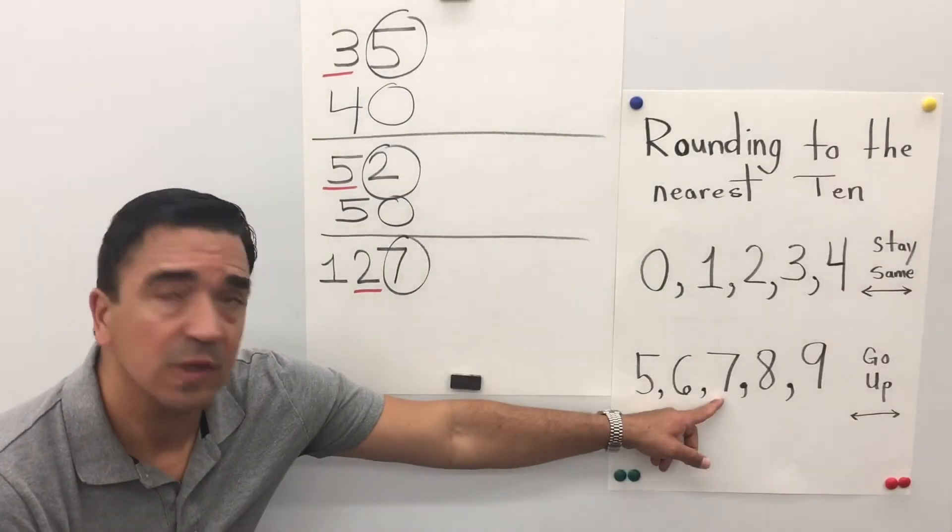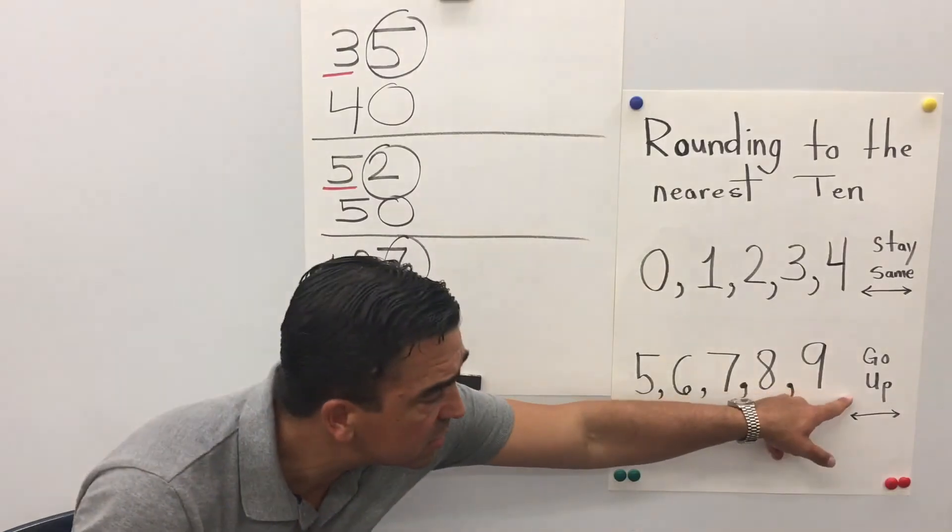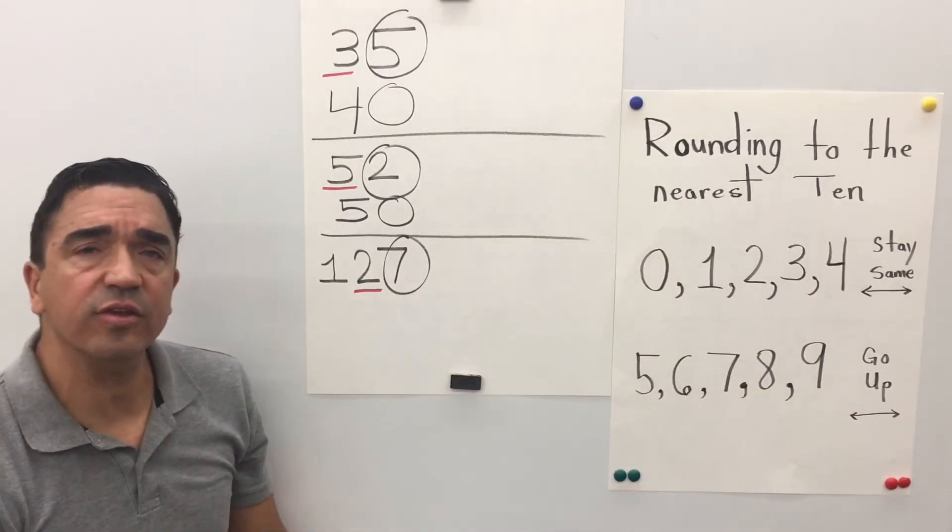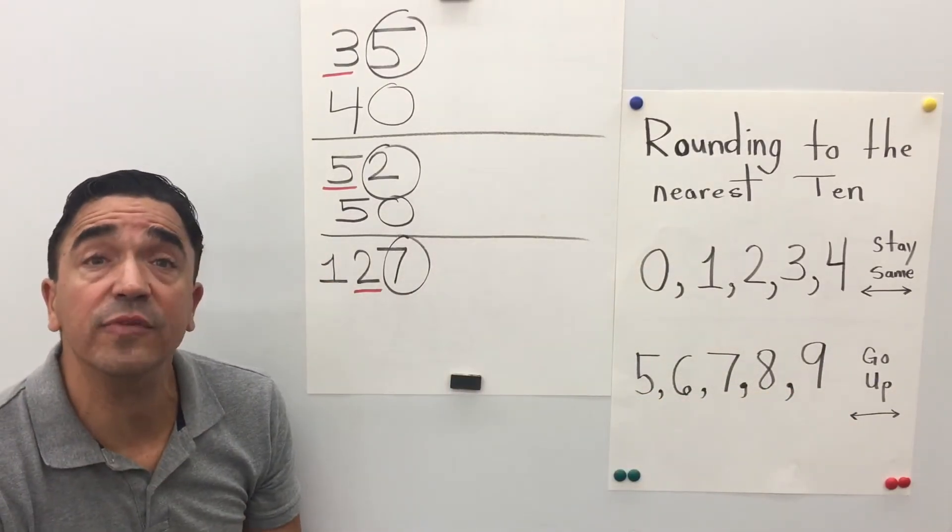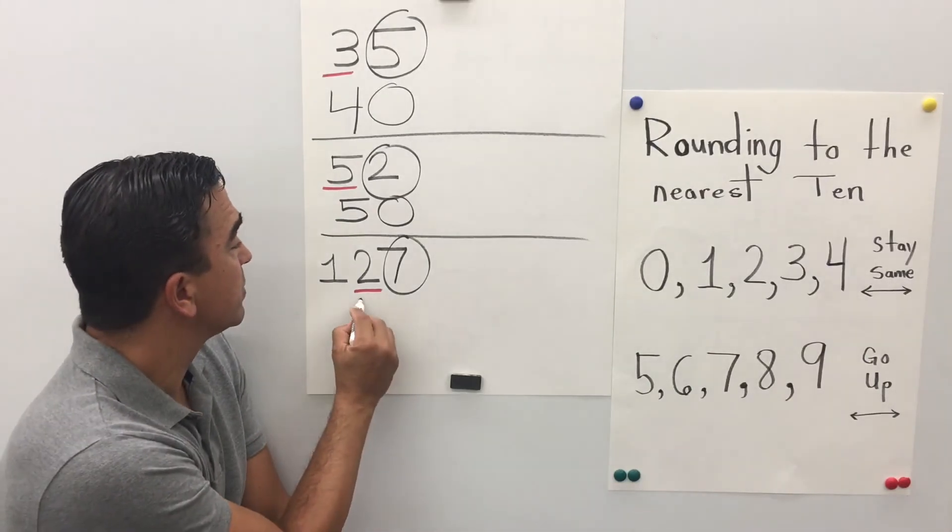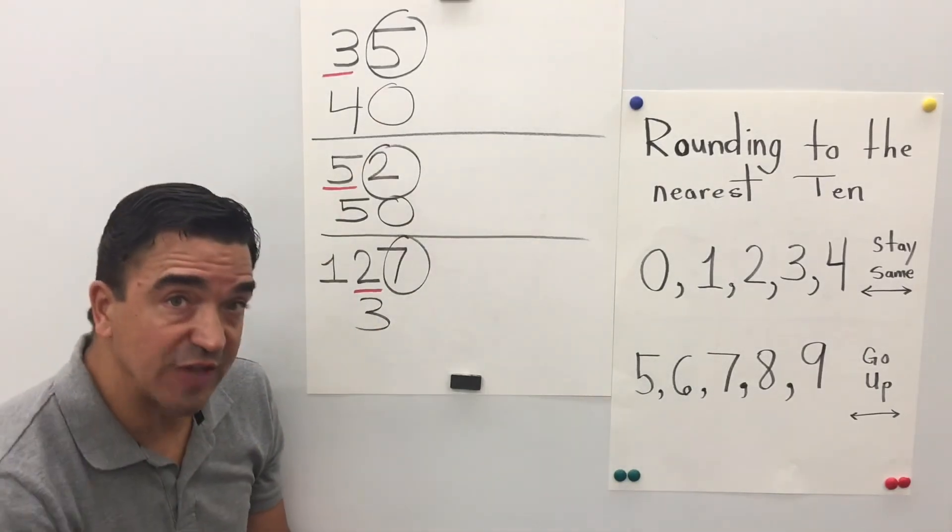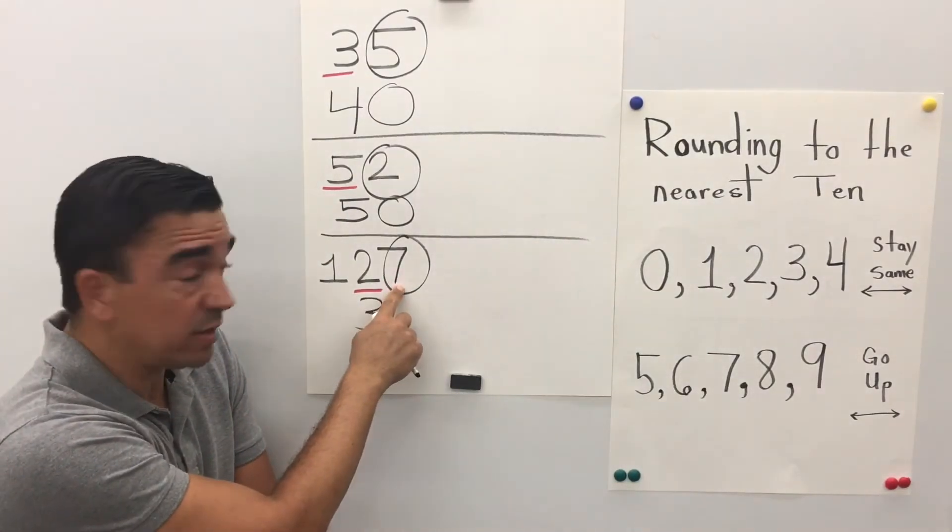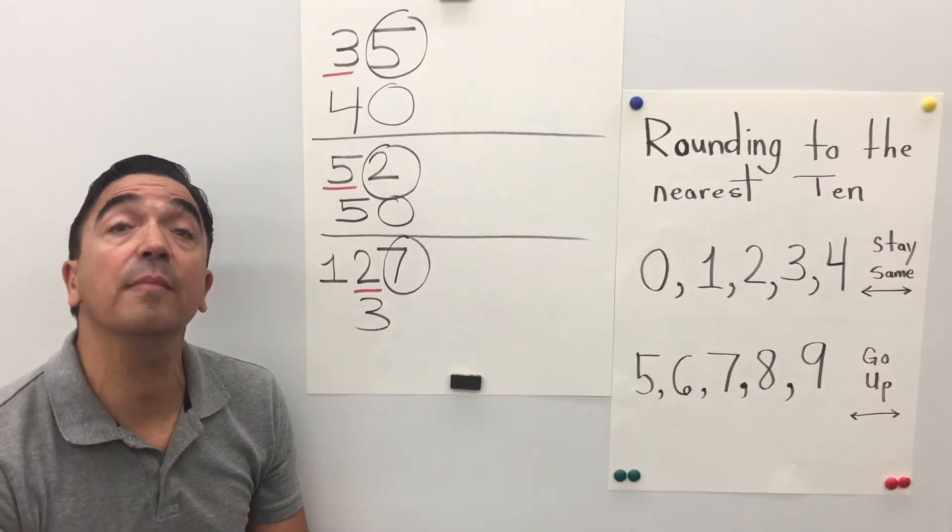The 7 is going to tell the 2 to go up, so it becomes a 3. All the digits after, one digit, 7, is going to become 0.